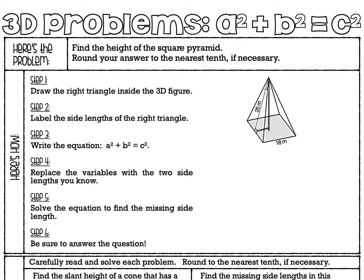If you look at this standing-up triangle, there's a right angle in the corner. This 25 that's on the slant is the hypotenuse, this is one of the legs — and notice it's only going halfway through the base, not all the way through. That leg is only half of the total base length of the square pyramid. So if the base is 18 meters, half of it would be 9 meters. I'll label that as 9. So I know this leg is 9 meters, the slant height is 25 meters, and we're finding the height. There's a difference between the height and the slant height.